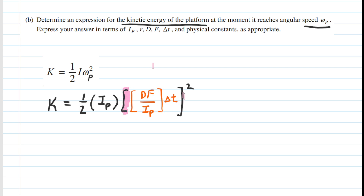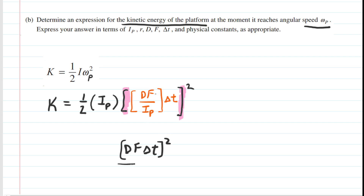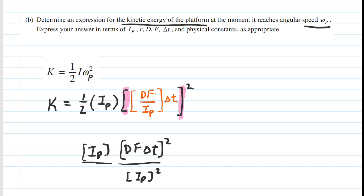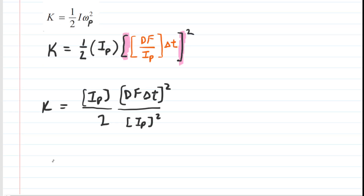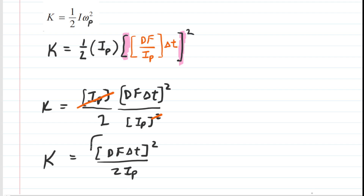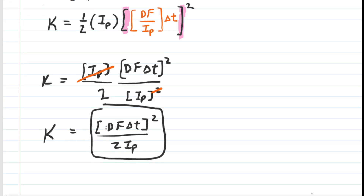We simplify by squaring the bracketed term. In the numerator we have D, F, and delta T each squared; in the denominator we have I sub P squared. Combined with the one-half and the other I sub P factor out front, we can cancel one factor of I_P. That leaves us with the simplified final answer: one-half times (D²F²ΔT²) divided by I_P. This is the correct answer to Part B.